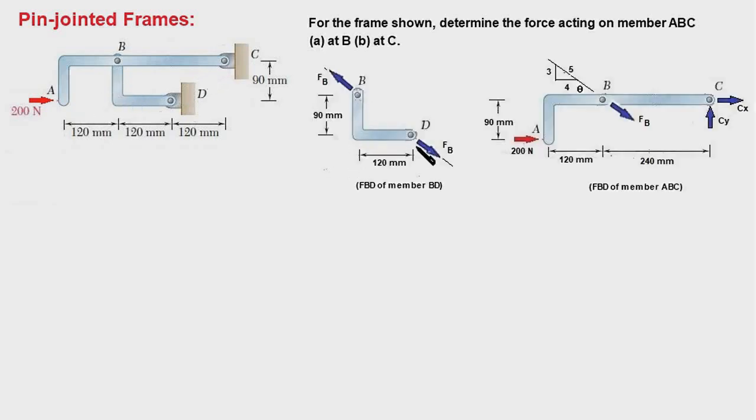BD is not a straight member. Nevertheless, it is a two-force member. The forces due to interaction with member AC at point B and the support at D. Forces acting on this member would be in a direction along this line joining the two points B and D.